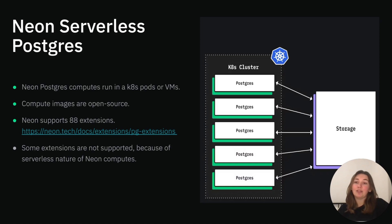Let's now move to the challenges of supporting Postgres extensions in the cloud. As you already know, Neon is a serverless Postgres, and from a technical perspective it means that Neon computes run as Kubernetes pods or VMs and they scale down to zero when there is no load. Another important fact for us today is that compute images are open source and built in an open repo. As of today, Neon already supports 88 of the most useful extensions and you can find the list in the documentation. Some extensions are not supported because of the serverless nature of Neon computes — for example, pg_cron scheduler and extensions that require file storage to be persistent across compute restarts.